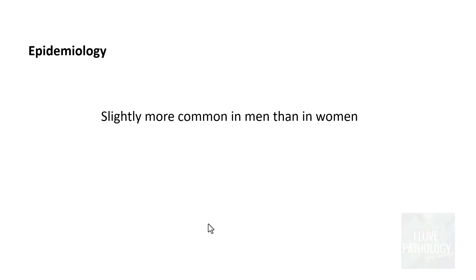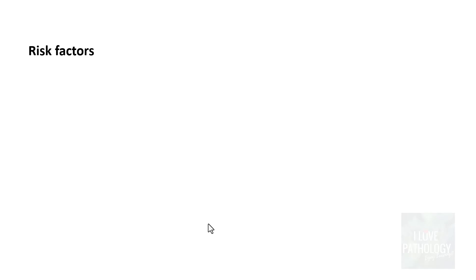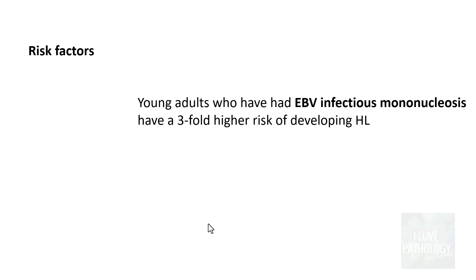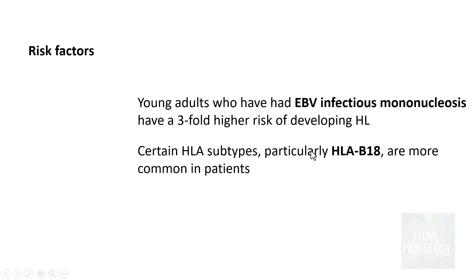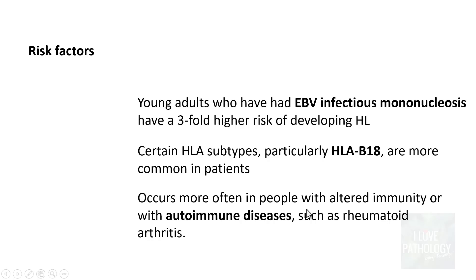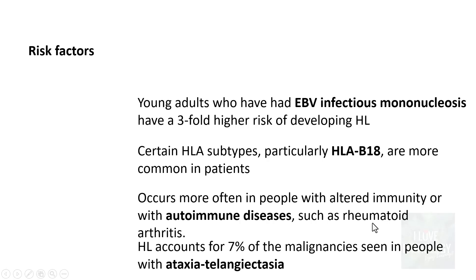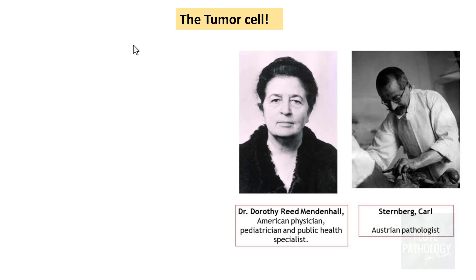It is slightly more common in men than women. The most important risk factor is that young adults who have had Epstein-Barr virus infectious mononucleosis have a three-fold higher risk of developing Hodgkin Lymphoma. Certain HLA subtypes, particularly HLA-B18, are known to have increased propensity to develop Hodgkin Lymphoma. It also occurs more often in people with altered immunity or autoimmune disease such as rheumatoid arthritis. Notably, Hodgkin Lymphoma accounts for around 7% of malignancies seen in people with Ataxia-Telangiectasia.